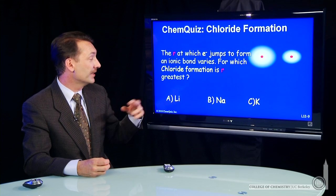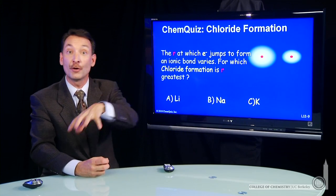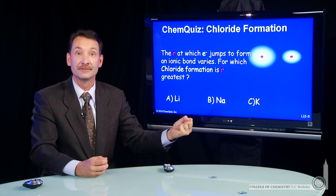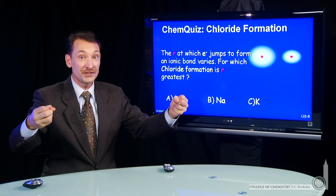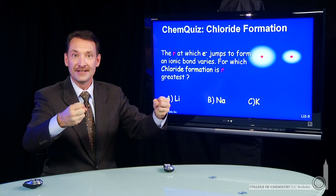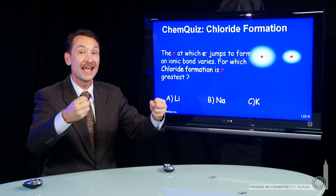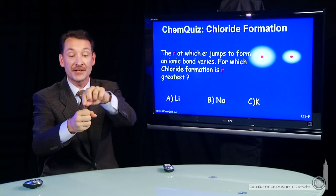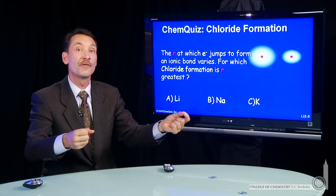So when chlorine approaches a lithium or a sodium or a potassium, the chlorine wants to pull an electron. The sodium and lithium and potassium want to give up an electron. The question is, at what distance does it make sense for them to do so? When is it energetically efficient for the electron to move from the potassium or the sodium or the lithium over to the chlorine?